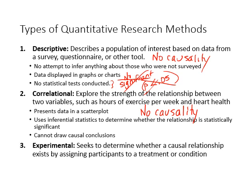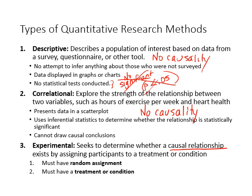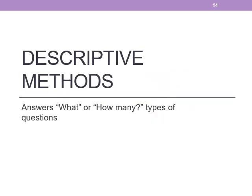Experimental designs are the one way that we can determine whether a causal relationship exists. We figure it out by randomly assigning people to a treatment or condition. There are two rules to determine if it's an experiment: first, it must have random assignment; second, there has to be a treatment — you have to do something to the participants. These two are strict must-haves in order to be an experiment. This is our content, and we will continue with our description of descriptive methods.